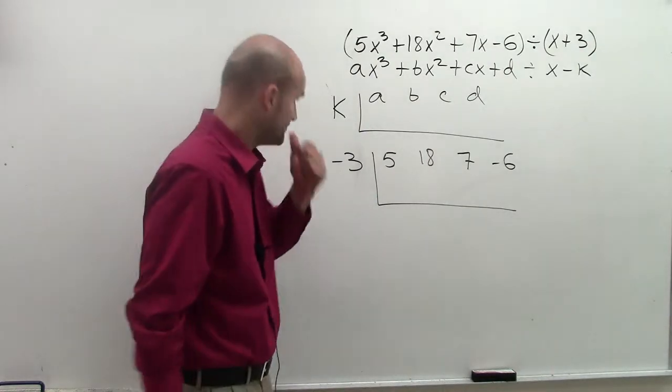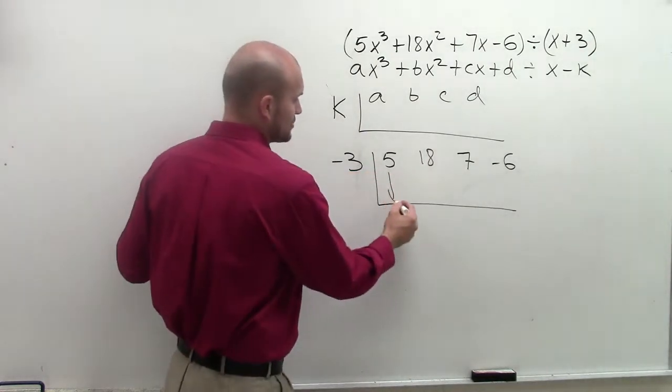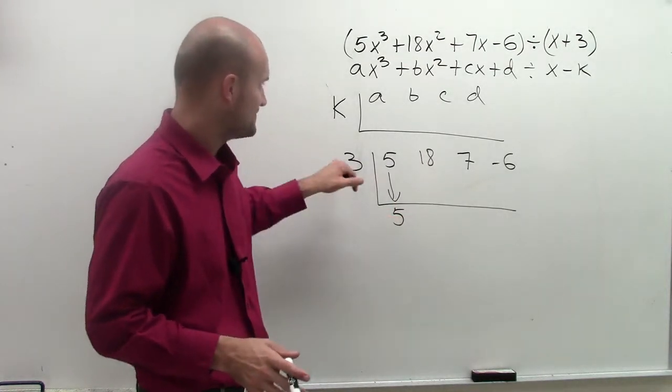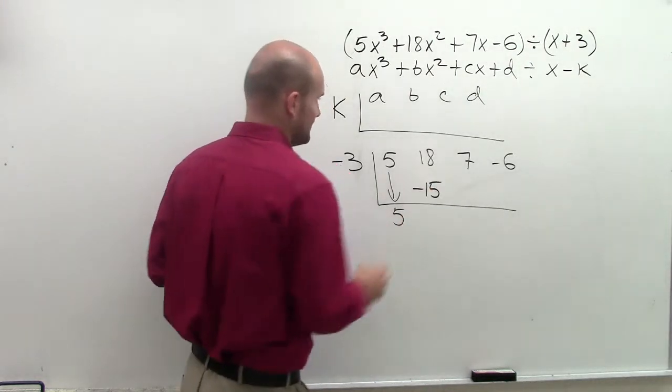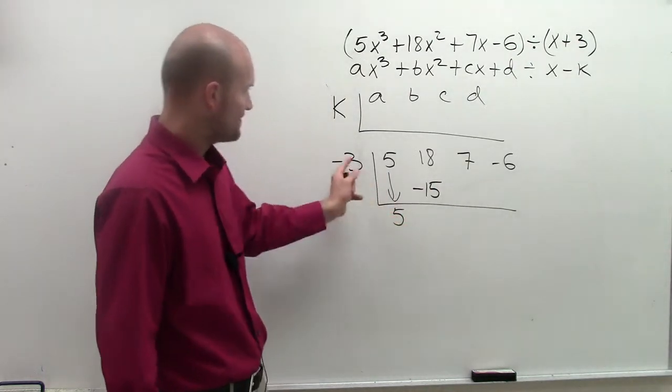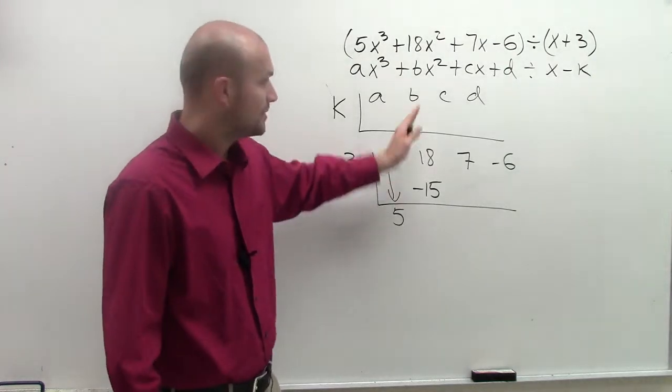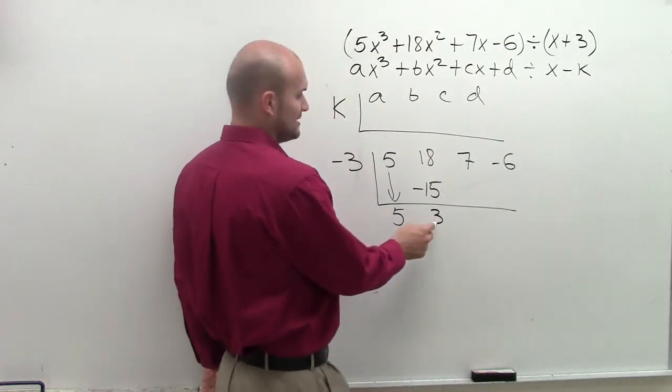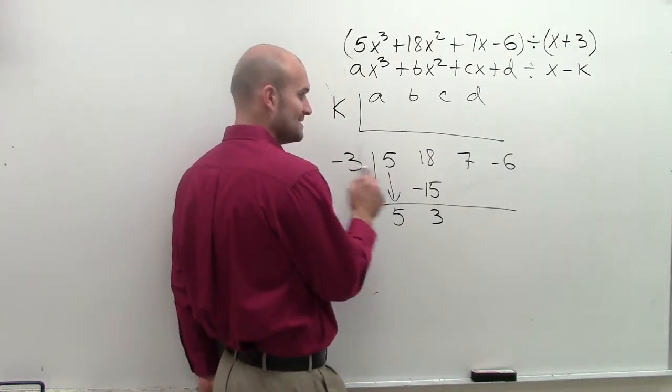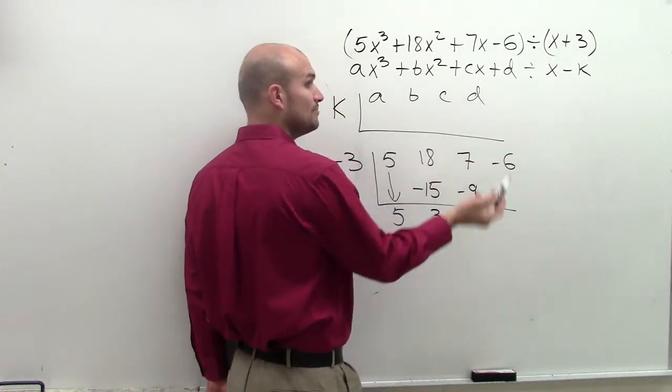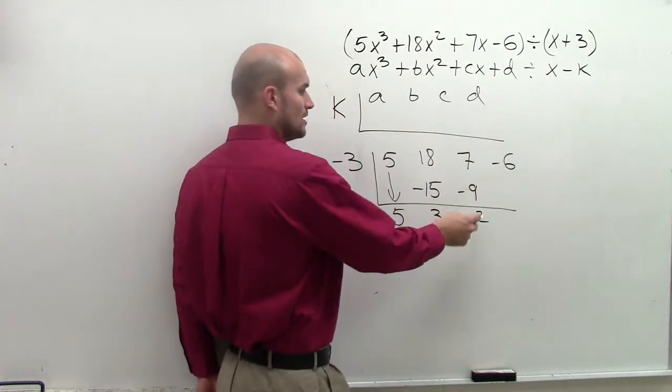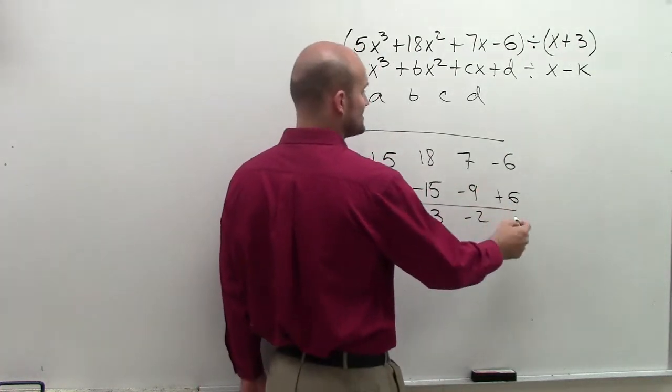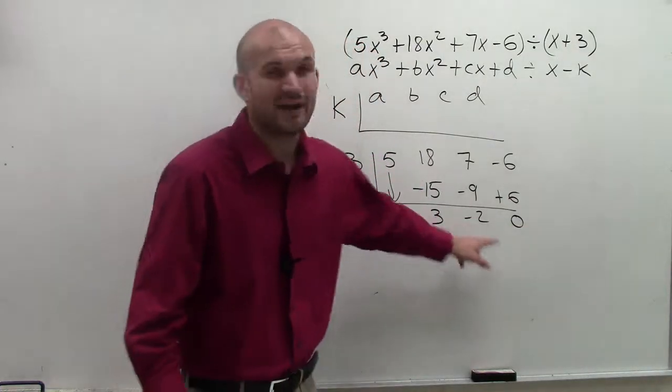Now I'm going to first drop down the 5. Then I'm going to multiply 5 times -3, which gives me -15. So when we go diagonal, we multiply. When we go vertical, we add. 18 plus -15 is 3. 3 times -3 is -9. 7 plus -9 is -2. -2 times -3 is 6. -6 plus 6 is 0. So this is our answer.